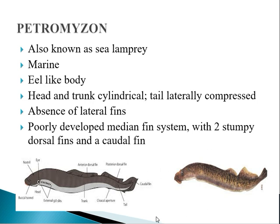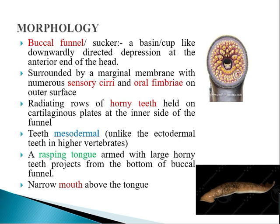Coming to external morphology, the mouth is a cyclostomate mouth, so it has a circular mouth in which jaws are absent. At the anterior region of the body there is a basin-like, downwardly directed depression called the buccal funnel or sucker.